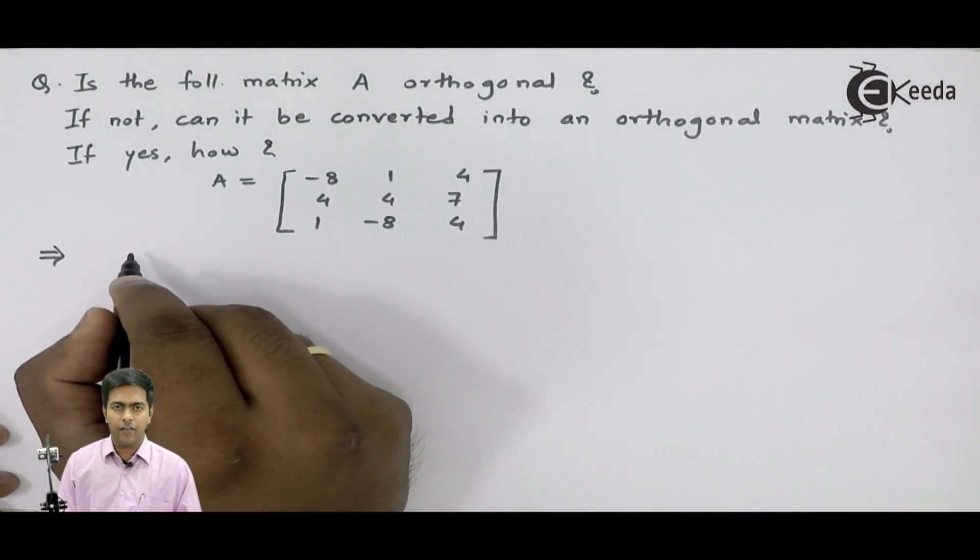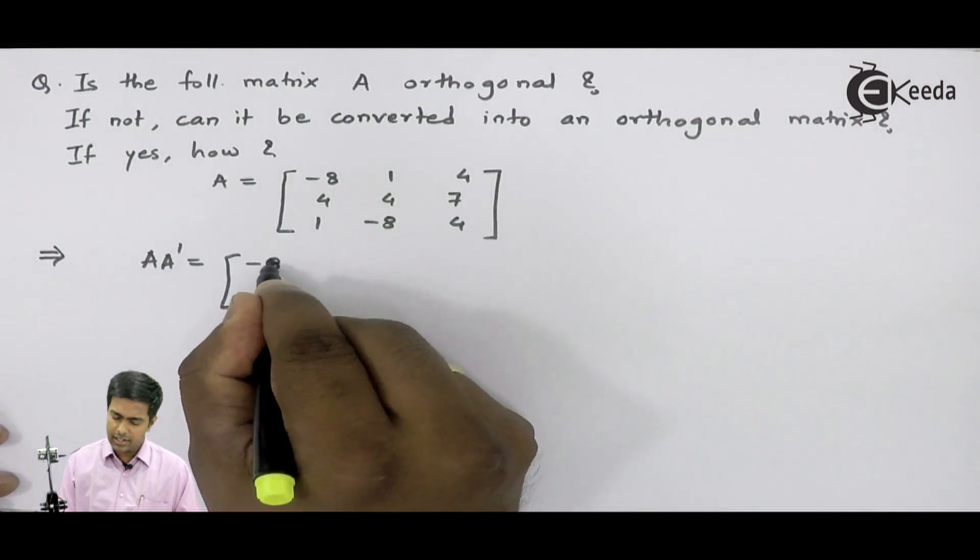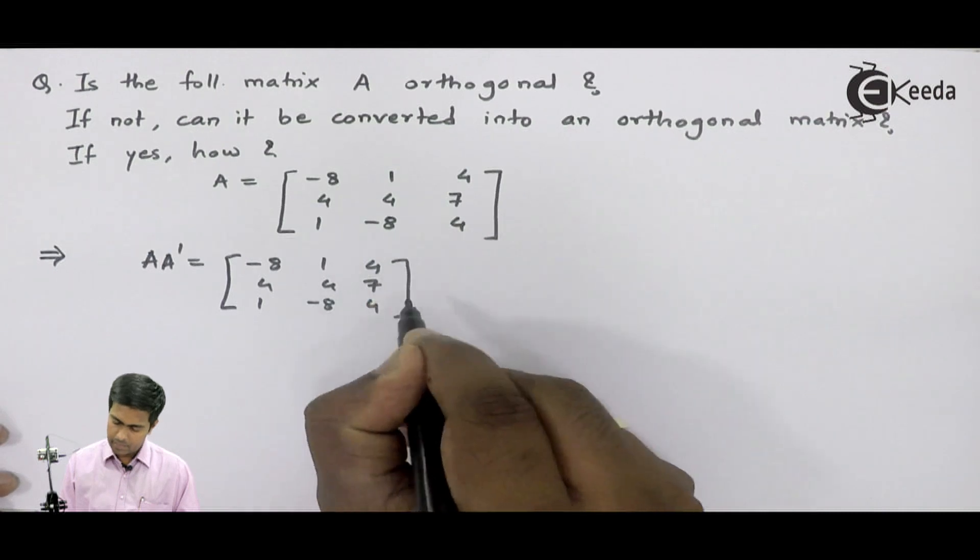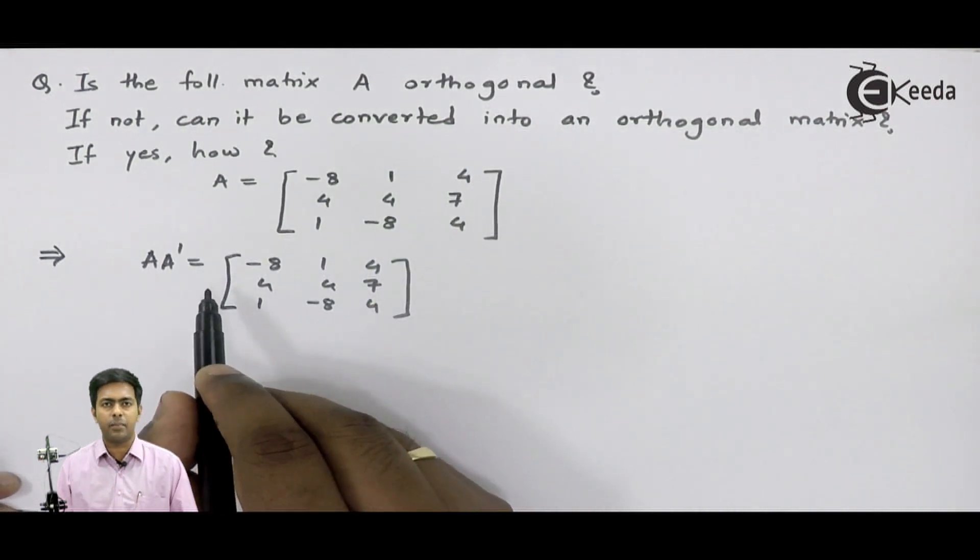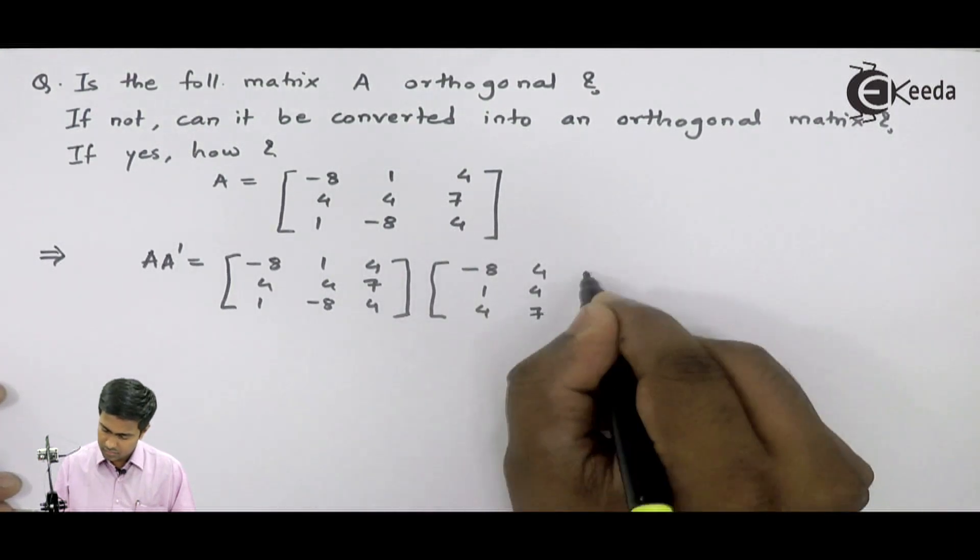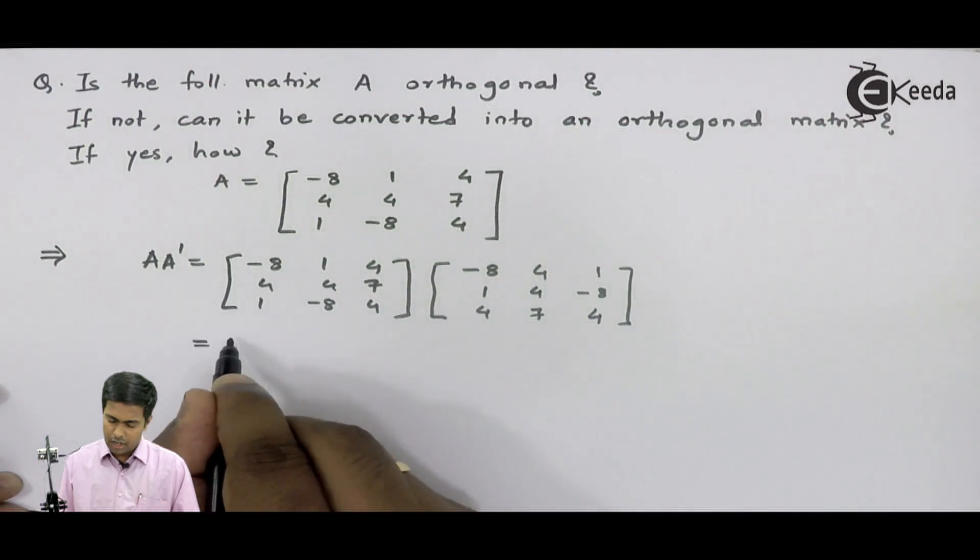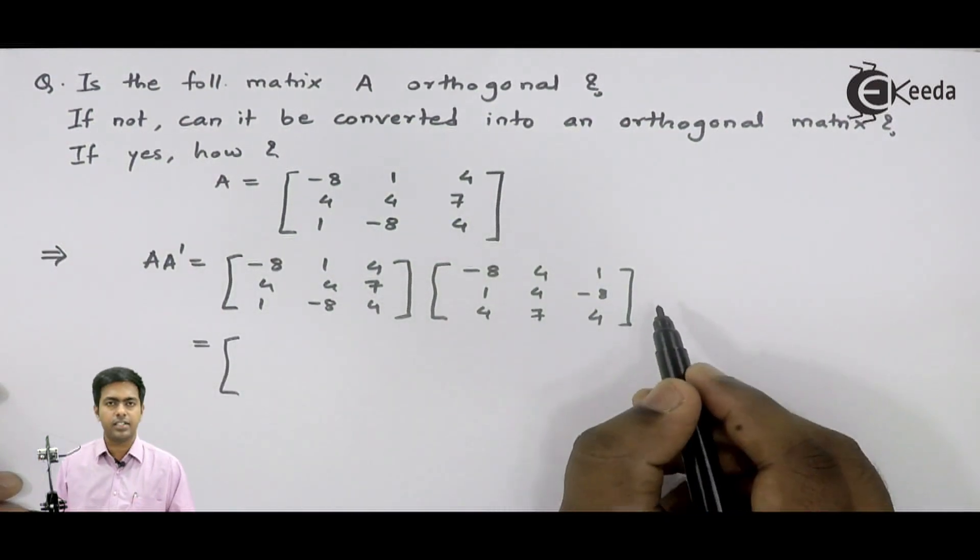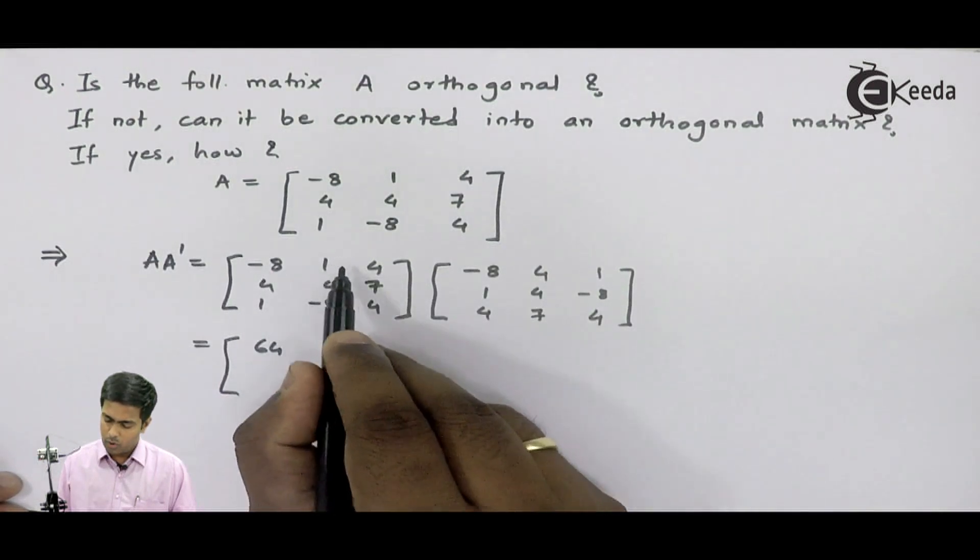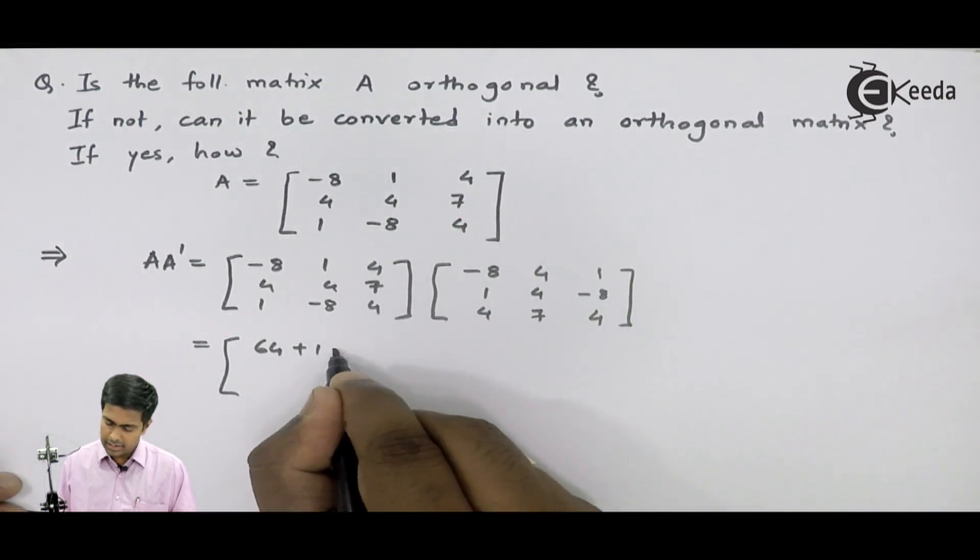I will find out A into A dash here. A is minus 8, 1, 4, and A dash is nothing but the transpose of A. Now let's multiply it. After multiplying these two matrices, we will get minus 8 into minus 8, that is 64, 1 into 1 plus 1, 4 into 4, that is 16.